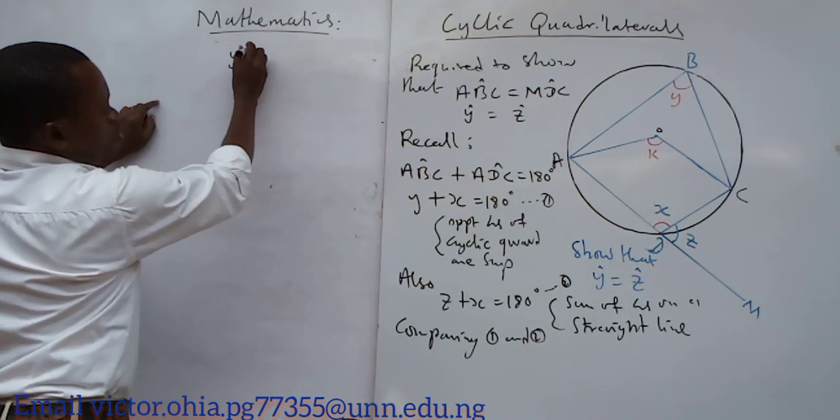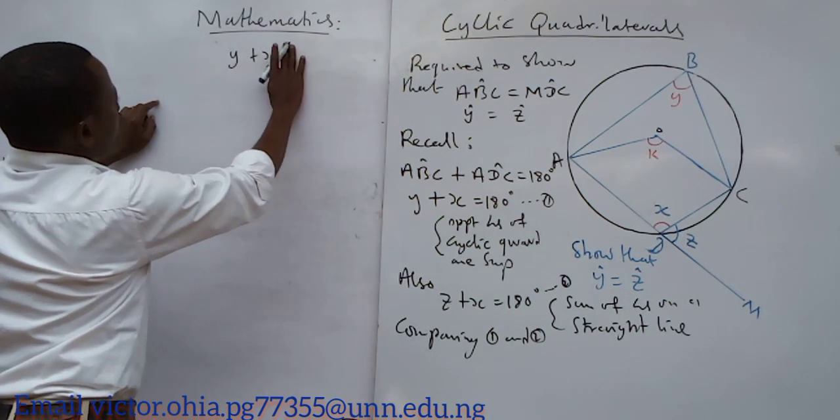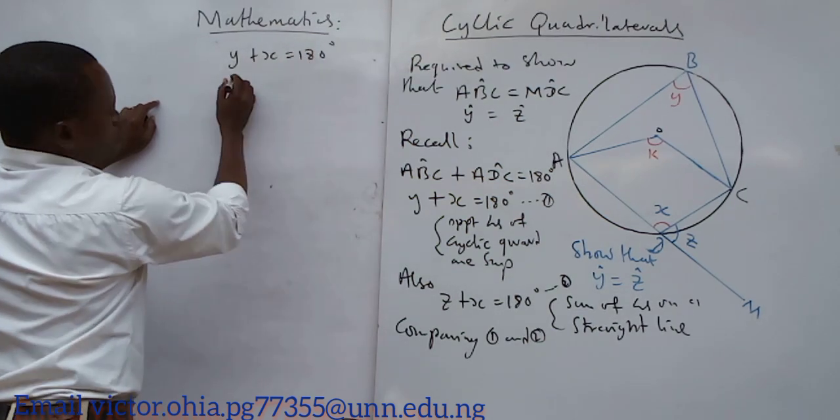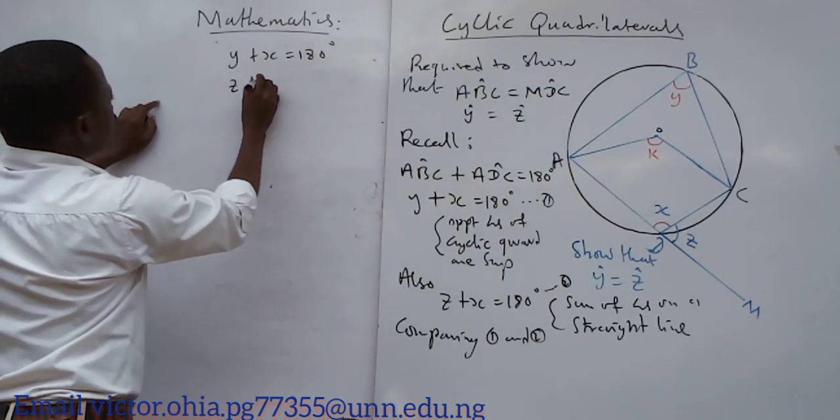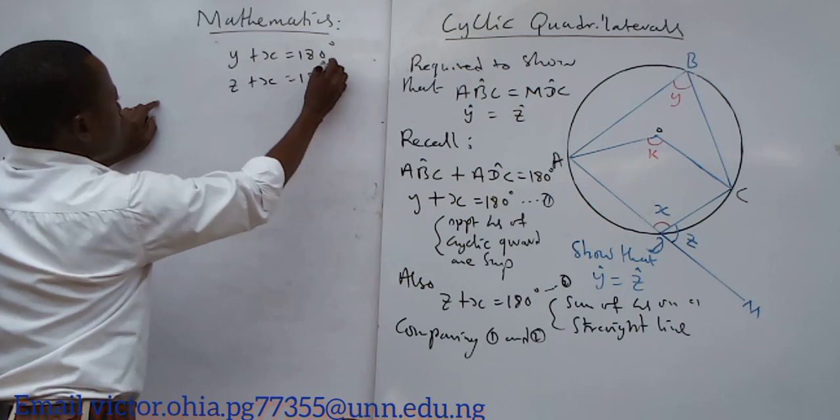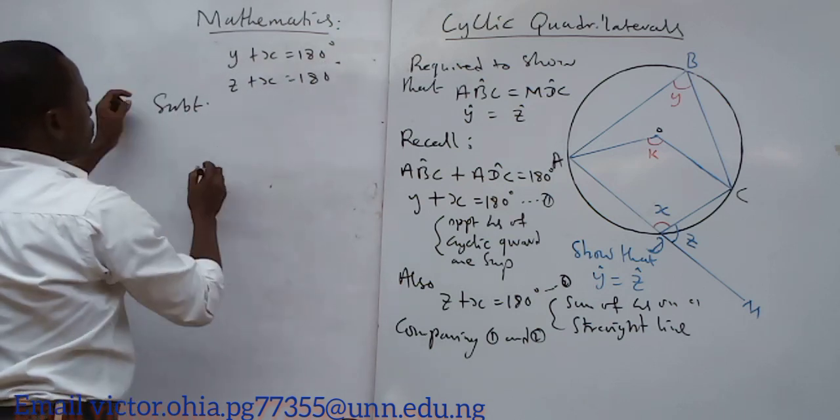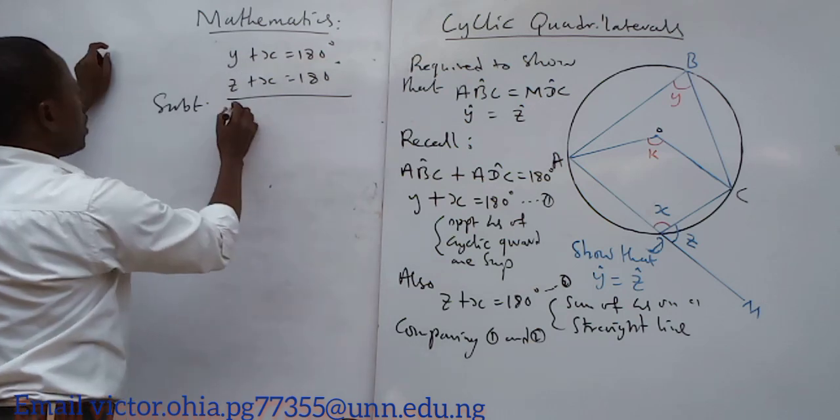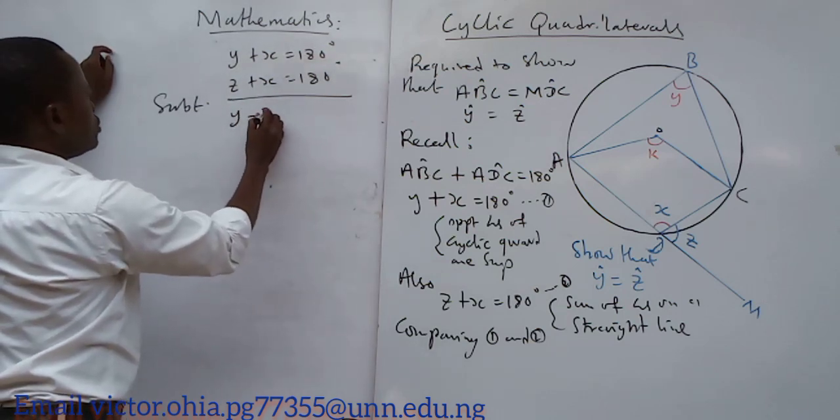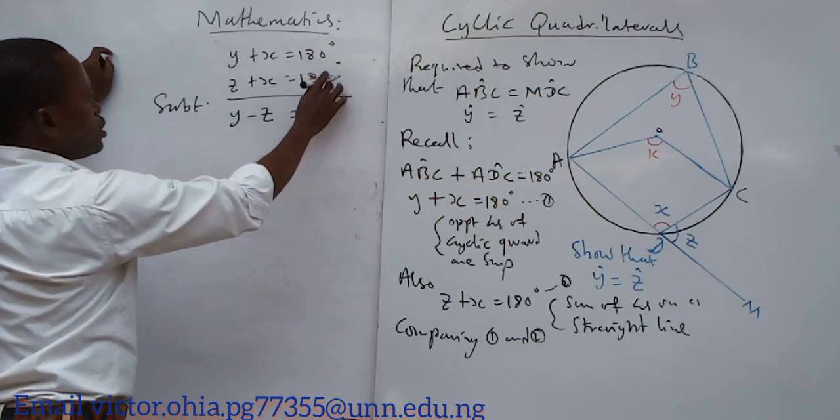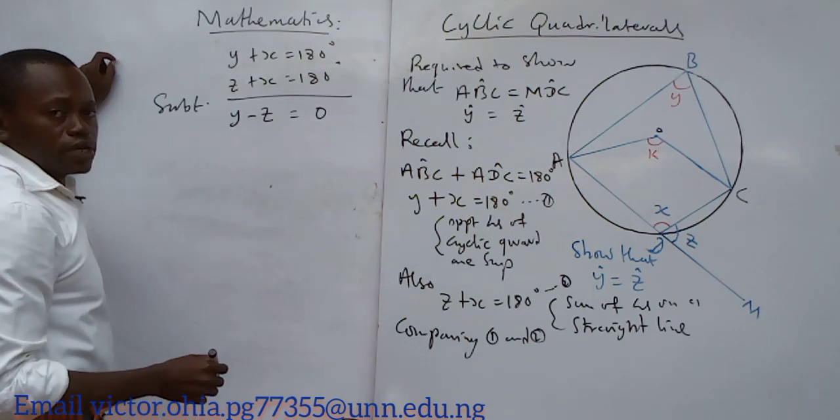I have y plus x equals 180 degrees, and I also have z plus x equals 180 degrees. So if I subtract them, I am going to have y minus z and x minus x equals zero. So 180 minus 180 equals zero again.